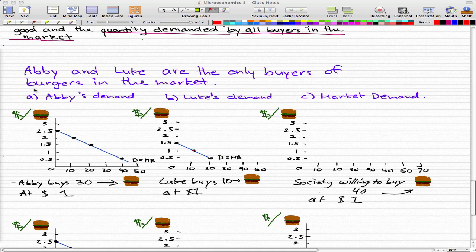We're going to start off with an example with Abby and Luke being the only buyers of burgers in the market. So Abby and Luke are the only people that buy these burgers and we have Abby's demand curves in the first column.